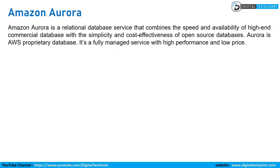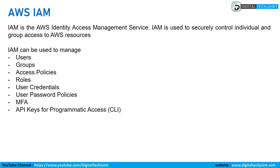Amazon Aurora is a relational database service that combines the speed and availability of commercial databases with the simplicity and cost-effectiveness of open source databases. Aurora is AWS's proprietary database — a fully managed service with high performance and low price.